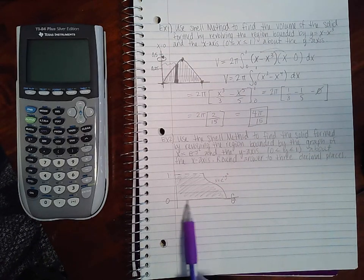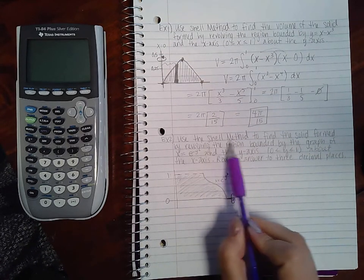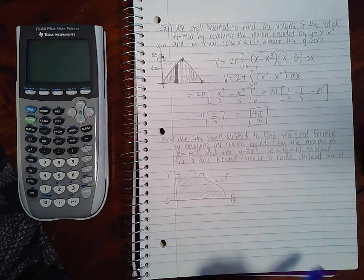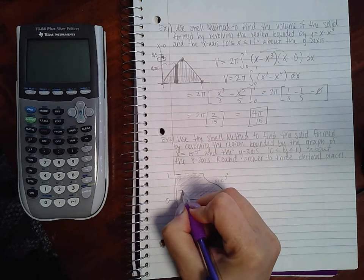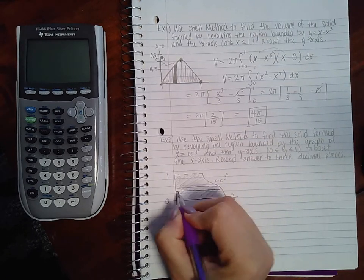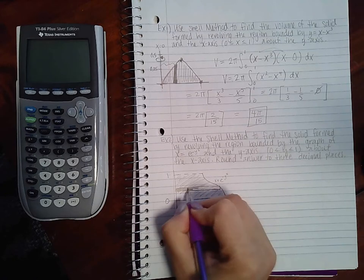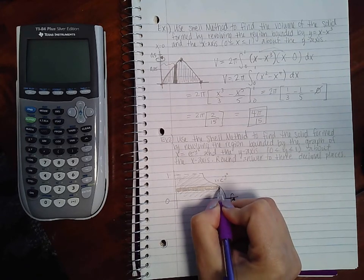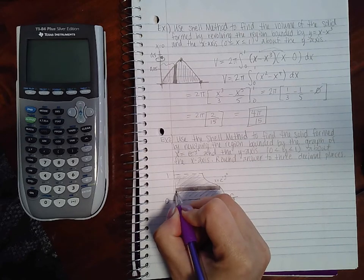And they give me between 0 and 1 for y, and I am revolving about the x-axis. So this time they've given me a horizontal line of revolution, and I am using the shell method, which means my rectangle needs to be parallel to that, which means that my rectangle will also have to be horizontal.